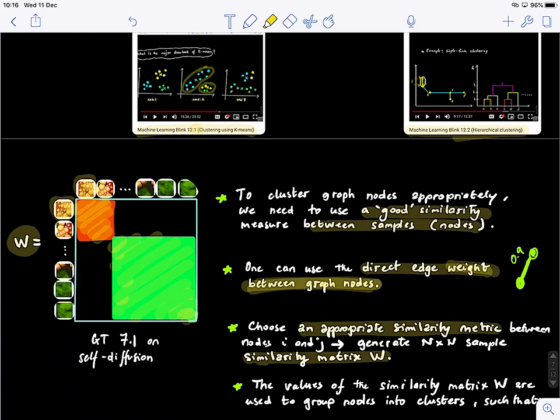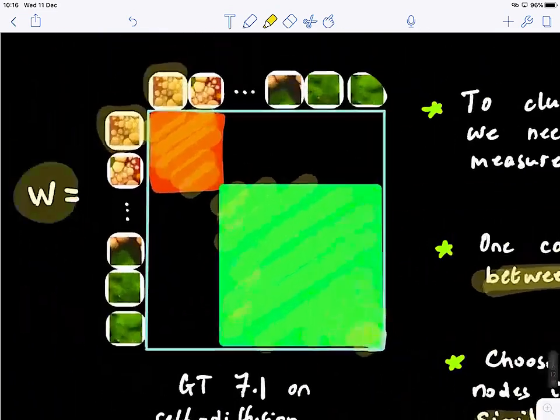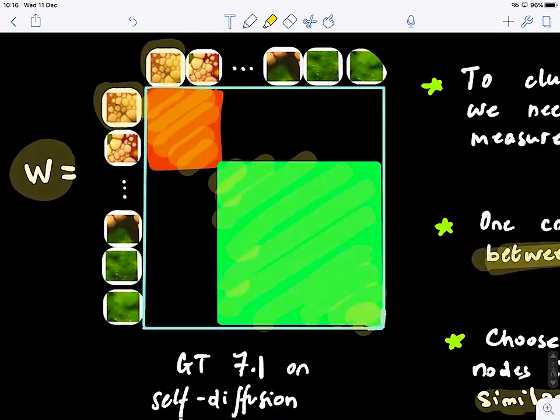Then we learned how to improve the similarity matrix W through the self-diffusion. And once we do that, we can actually apply this to the graph to find the clusters of nodes within this graph. So self-diffusion can be used for clustering different nodes.